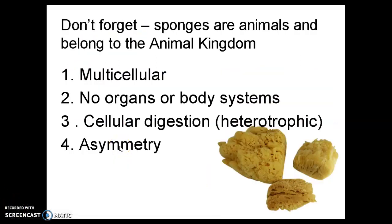At first glance, a sea sponge might look like it's a plant, but sponges are animals because they have these four things. First, they are multicellular. What separates sponges from even more primitive colonial animals is that in sponges, we actually start to see differentiated cells — different cells with different functions all working together to keep the whole sponge body alive. They don't have any organs or body systems yet, though, so that's why these are very primitive animals.